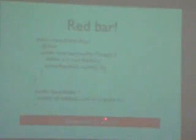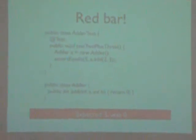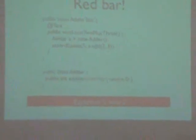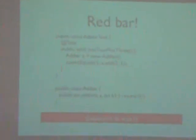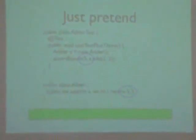Now the test compiles but we are not right. We run the test and it fails. It expected 5 but it returns 0. Now the next thing we can do is make the smallest change to get a green bar. Small is key — work in small steps. So we return 5.